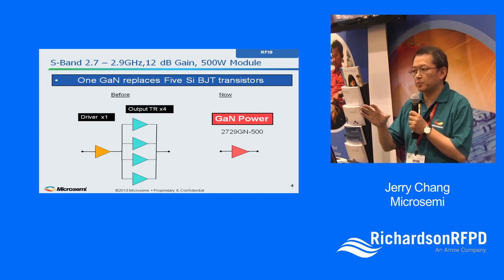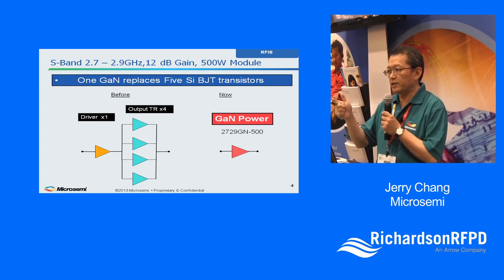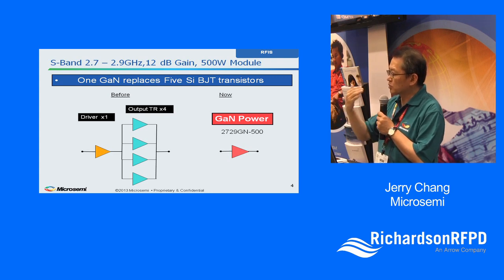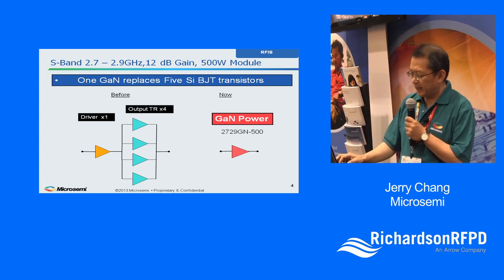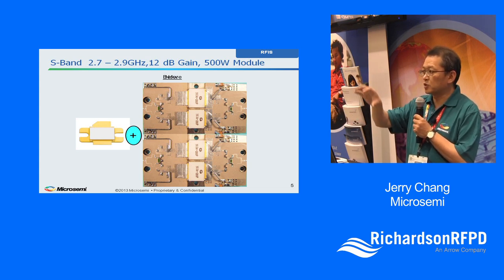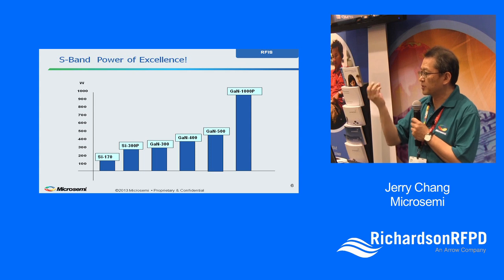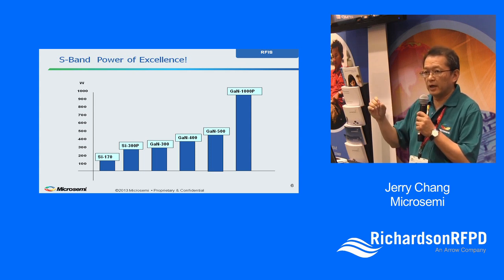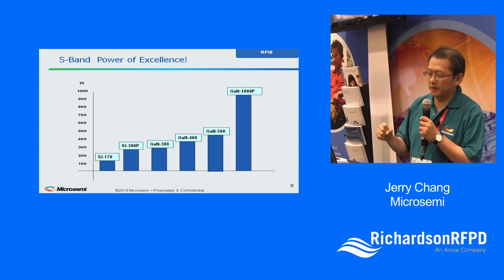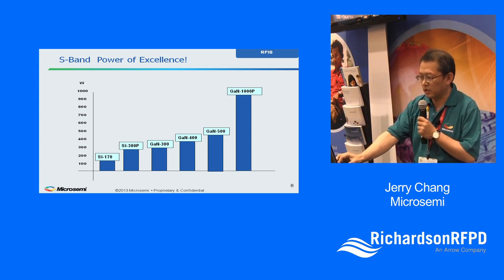Industry experts evaluate technology using a framework called SWAP — size, weight, and power — and we add one more: efficiency. So throughout this presentation you'll find the GaN power transistor advantage in size, weight, power, and efficiency. Looking at size specifically: the same specification of 2.7–2.9 GHz, 12 dB gain, 500 watts traditionally required one driver plus four transistors — a rather large assembly. With GaN technology, all of this is replaced by one single transistor, greatly reducing system size, complexity, and labor cost.